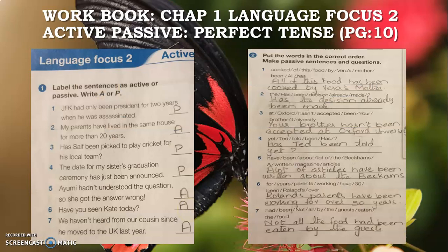Workbook Chapter One, Language Focus Two, Active/Passive Perfect Tense — page number 10, Question Number One: Label the sentence as active or passive, write A or B. I have already solved this question for you. You can see I have written B in front of passive sentences and A for active voice.